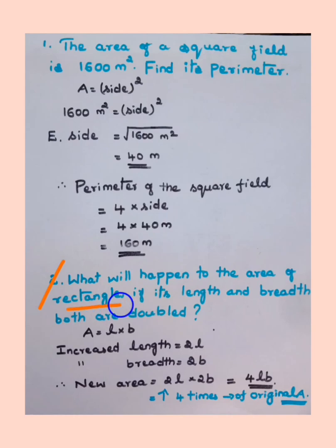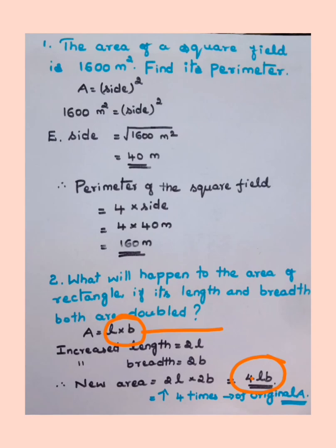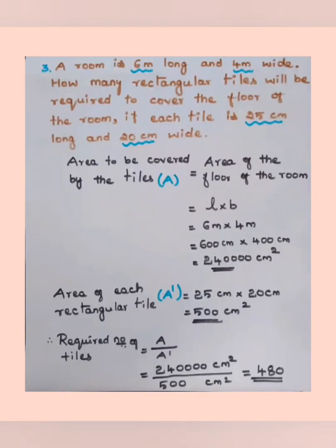Problem 2: What happens to the area of a rectangle if both its length and breadth are doubled? Original area = l × b. New area = 2l × 2b = 4lb. Therefore, the area increases 4 times the original area.